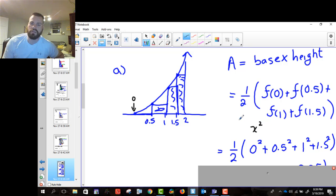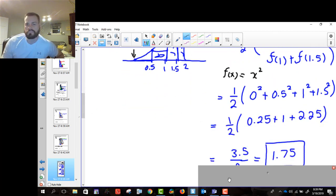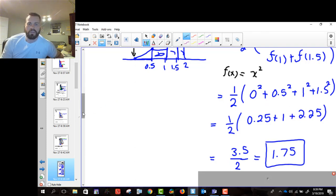So we get 0 squared, 0.5 squared, 1 squared, and then 1.5 squared. And you just evaluate that on your calculator, and you get that. Or you can evaluate it by hand if you want to. But 0.5 squared is 0.25, 1 squared is 1, 1.5 squared is 2.25. You add them together, and you get 1.75.